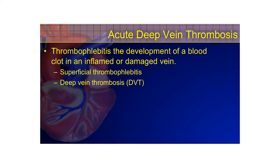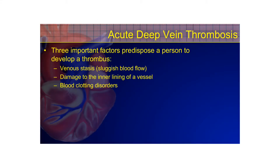A patient with an acute DVT often has thrombophlebitis — the development of a blood clot in an inflamed or damaged vein. Superficial thrombophlebitis occurs when a clot develops in a vein near the surface of the skin, while a DVT occurs in the deep veins of the extremities. DVT is associated with an increased risk of pulmonary embolism because the clot can break loose, travel to the pulmonary circulation, and cause severe acute dyspnea and obstructive shock.